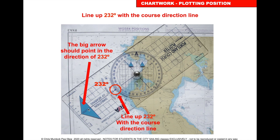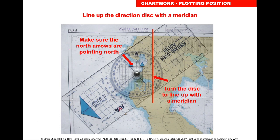Lift the plotter and set 232 in the rotational disk circle. Place the edge of the plotter on the lighthouse with the big arrow pointing in the direction of 232 and the little arrow pointing to the top of the chart. Slide and twist the plotter until the arrows on the disc line up with a vertical or horizontal line on the chart. Stand up, look straight down, make sure your pencil is on the centre of the lighthouse, and draw the line.